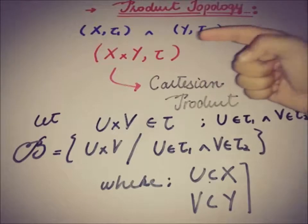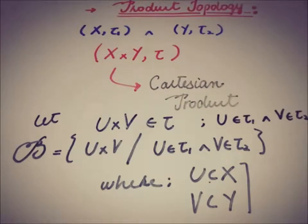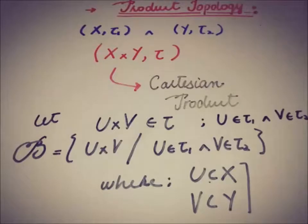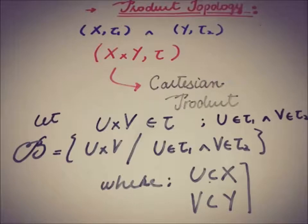So we have two topological spaces X and Y with topologies tau1 and tau2, and we have formed the topology tau of the Cartesian product X cross Y. We have defined the basic elements of X cross Y containing elements of this type. Note that here we are dealing with only two topological spaces, but the product can be of finitely many or infinitely many topological spaces.